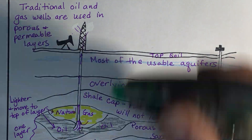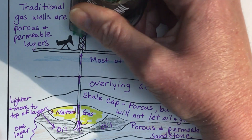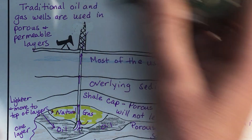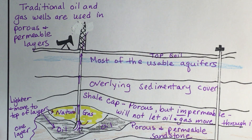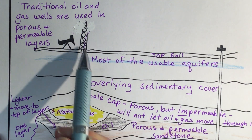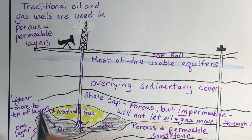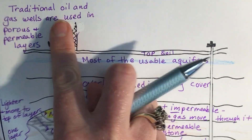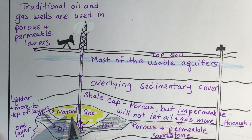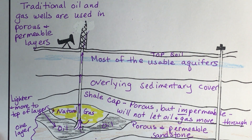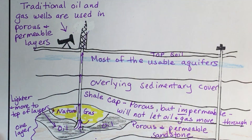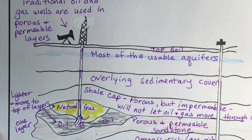The pump at the top helps get oil out of the ground when the pressure is gone and we still have oil to extract. So that's what traditional oil and gas wells are — and they're still drilled and used today.